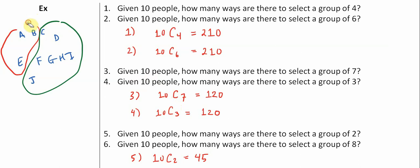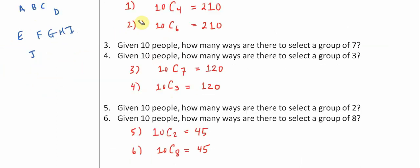So this gets us to a very wonderful and helpful identity here in the world of factorial and combinatorics. Let me write it this way: n choose r is in fact equal to n choose (n minus r).